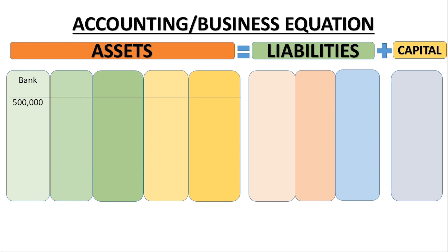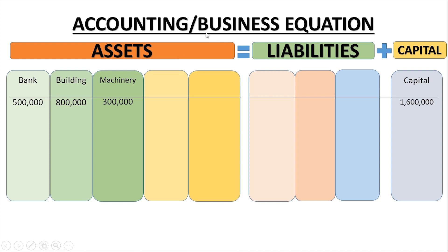Bank is increased by $500,000, building by $800,000, and machinery by $300,000. Capital is also introduced at $1,600,000. After this transaction, I have recorded $1,600,000 on the asset side and $1,600,000 on the liabilities and capital side — both sides are equal.